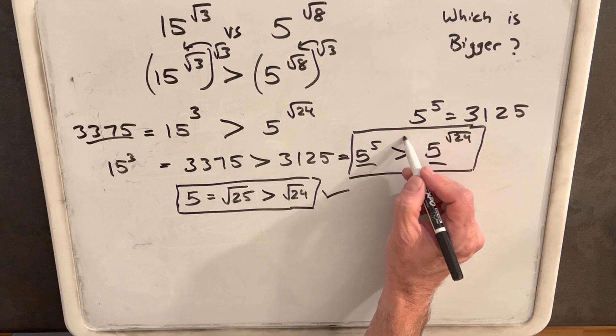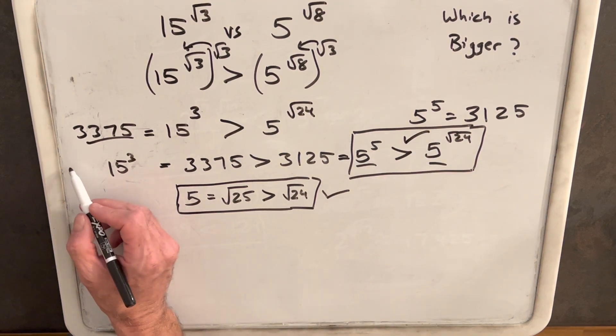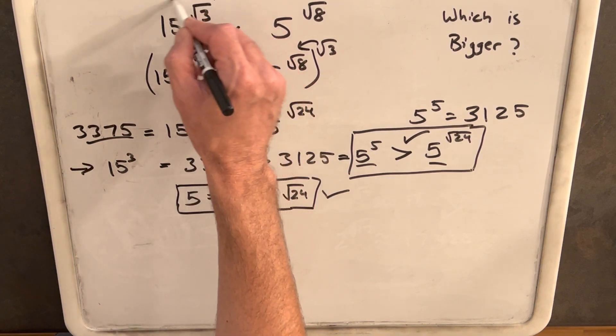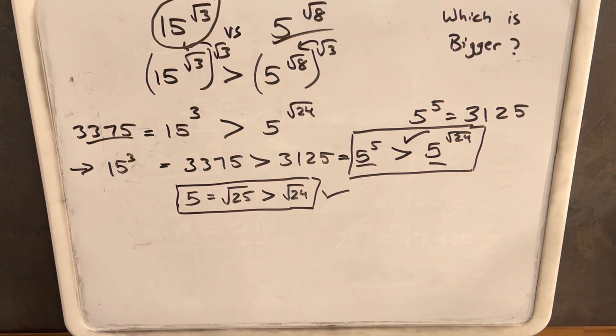So this is true and this is true. And so this line is true and therefore 15 to the square root of 3 is greater than 5 to the square root of 8.